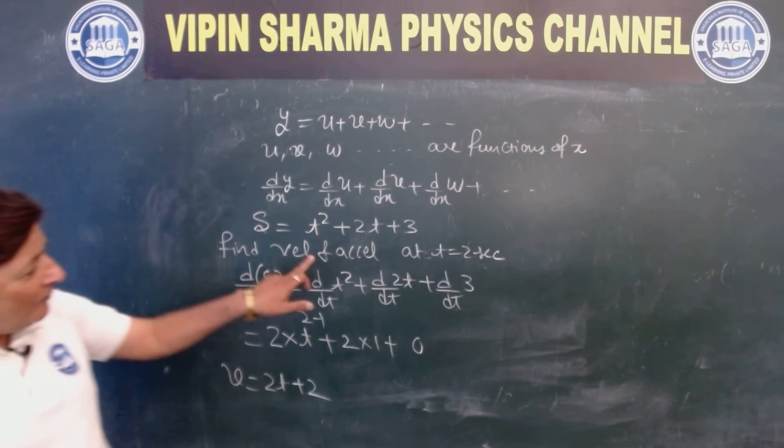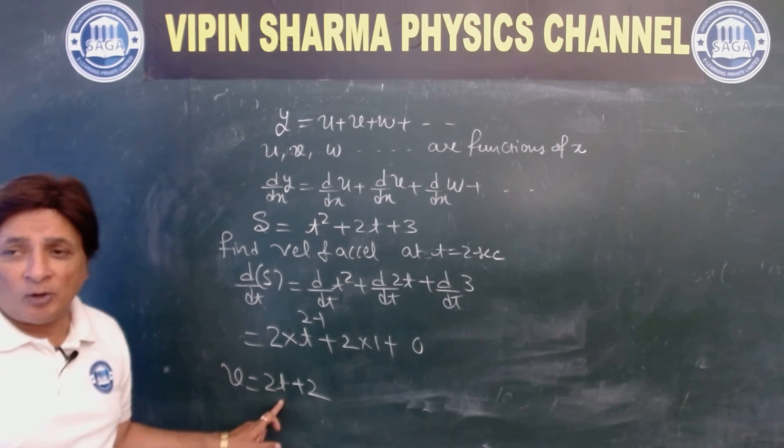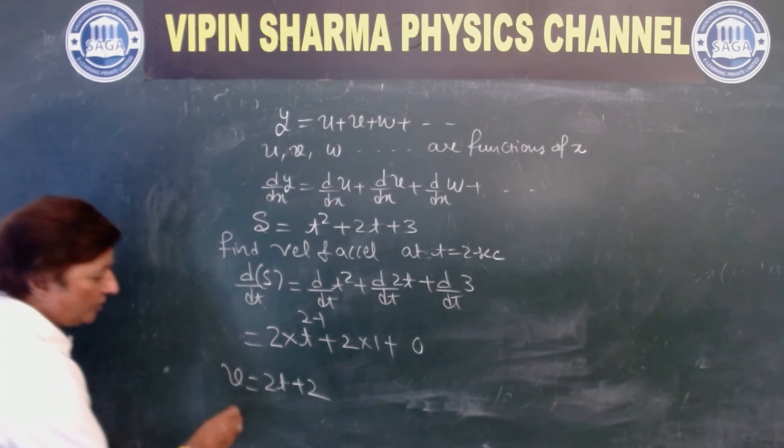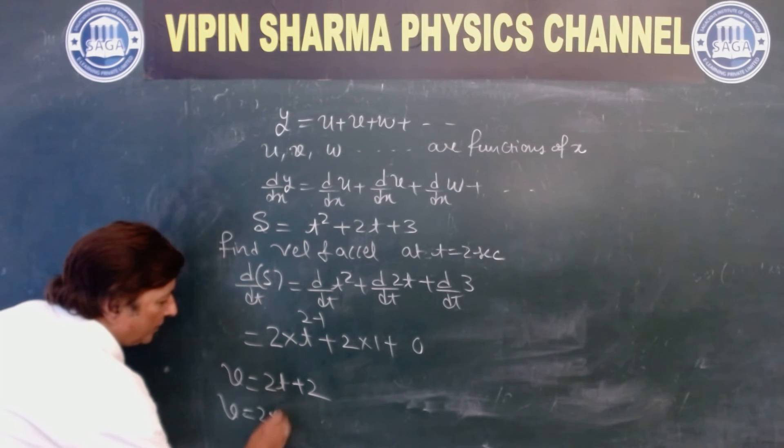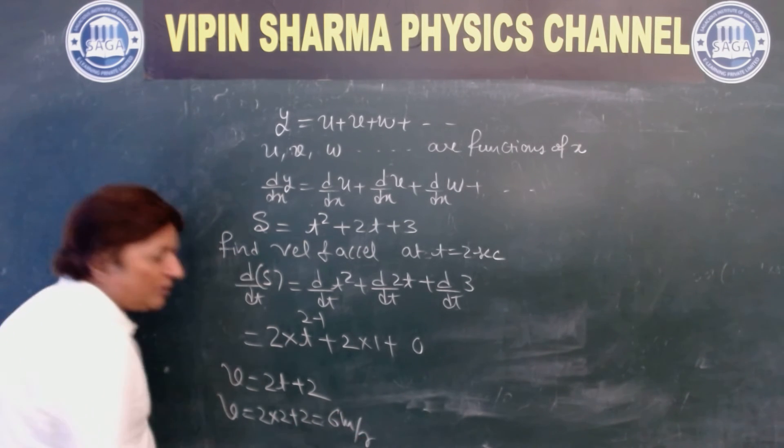He said find velocity at t equal to 2 seconds. There is no rocket science. So put the value of t. This is 2 into 2 plus 2. This is 6 meters per second.